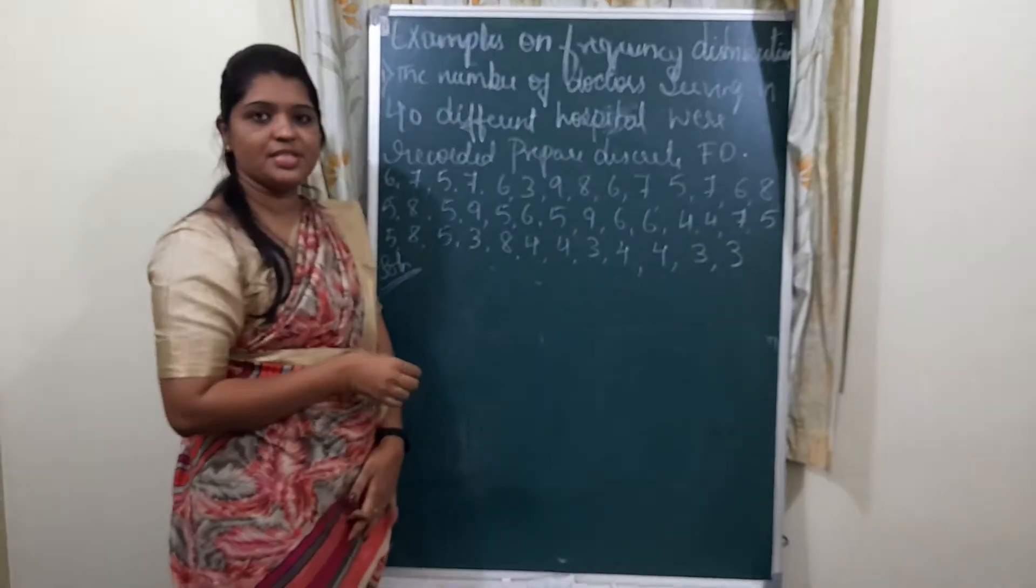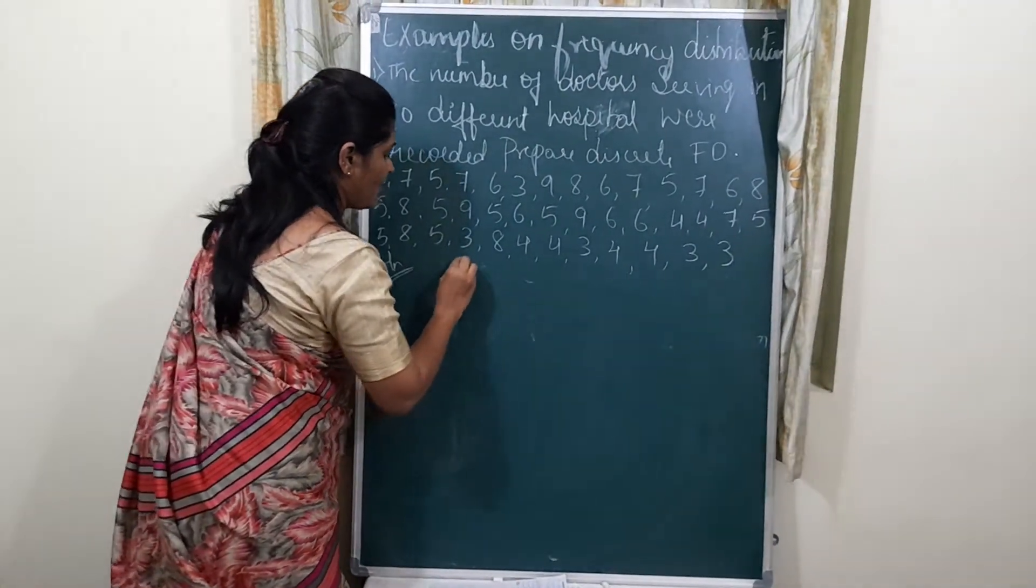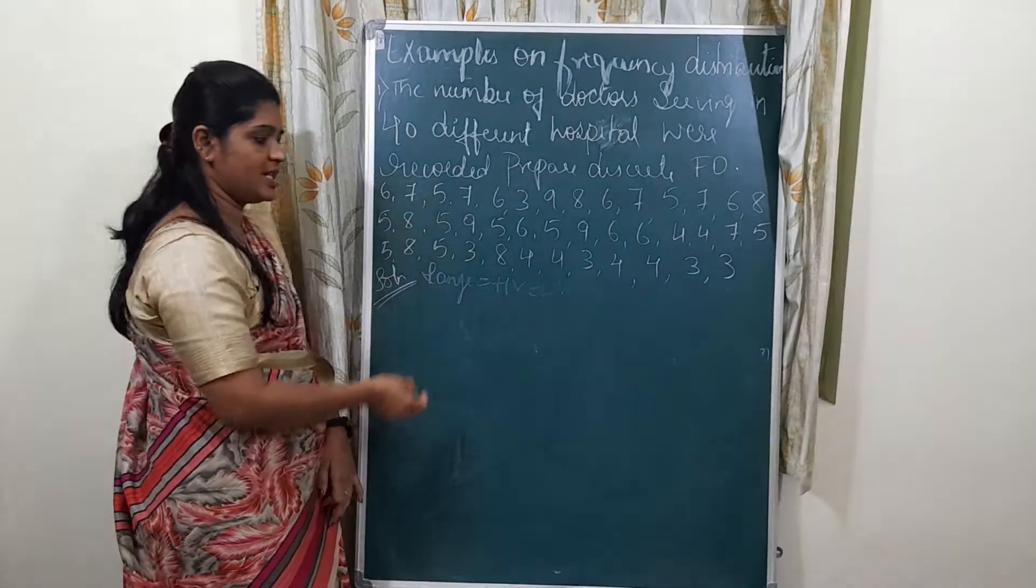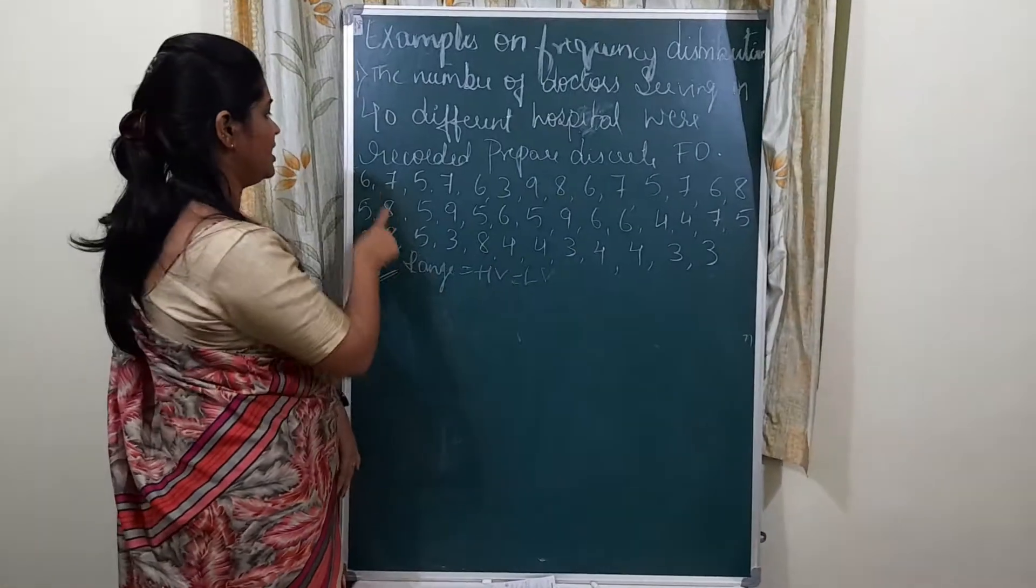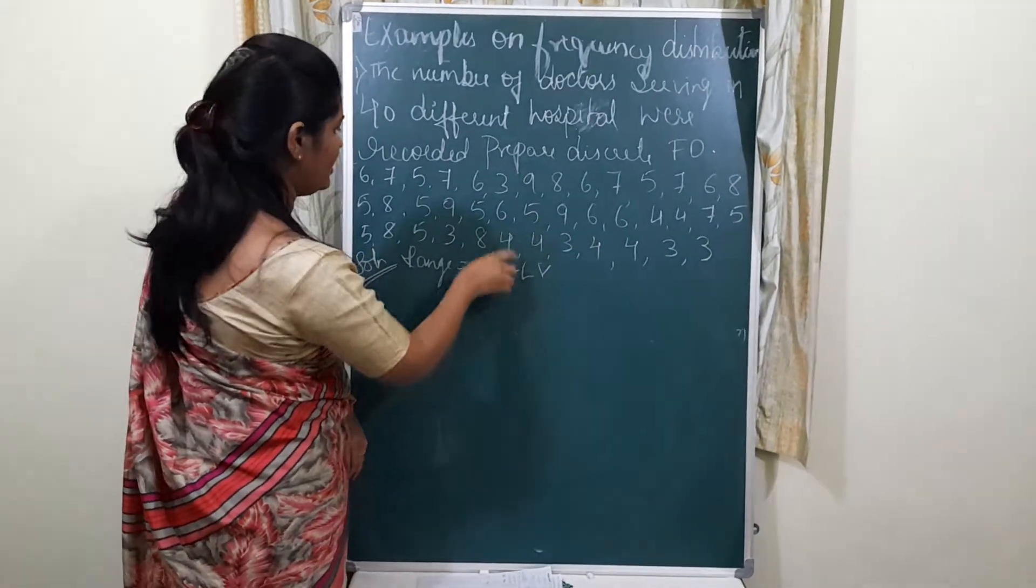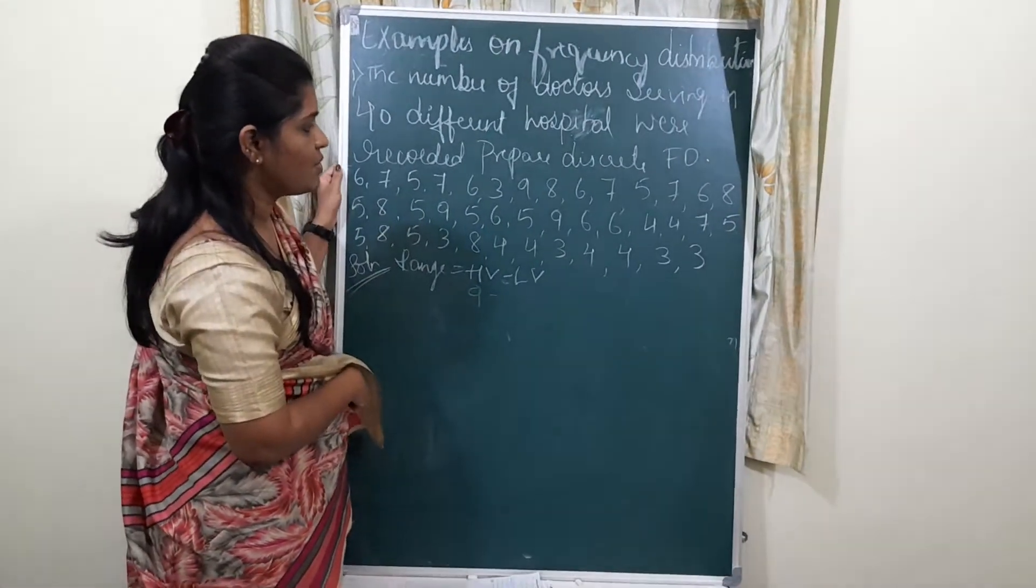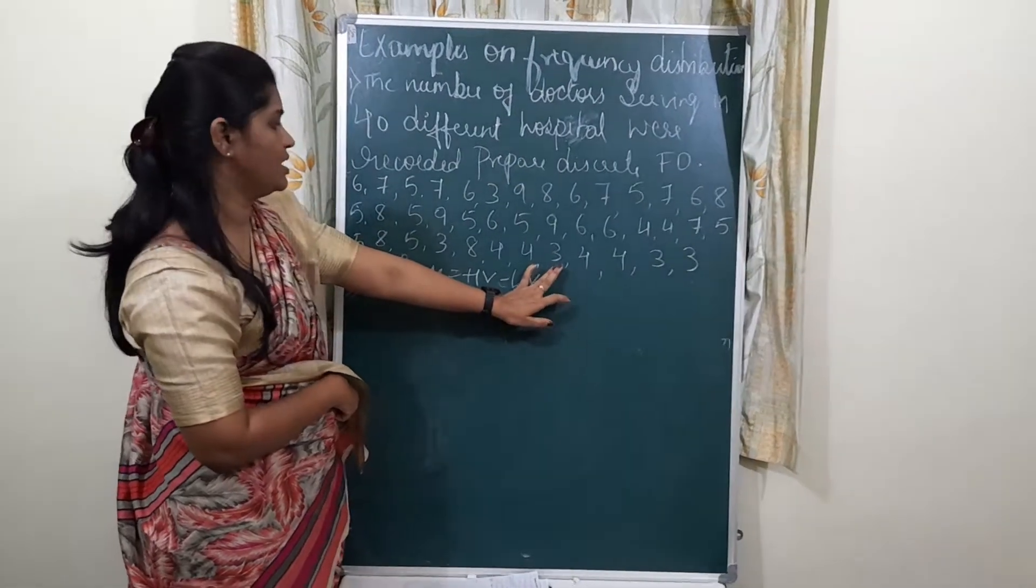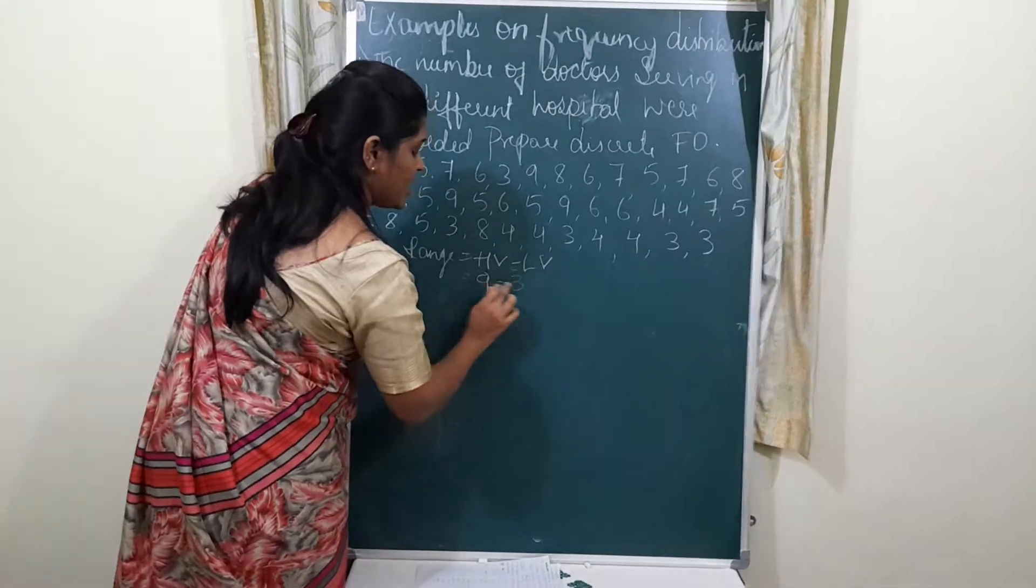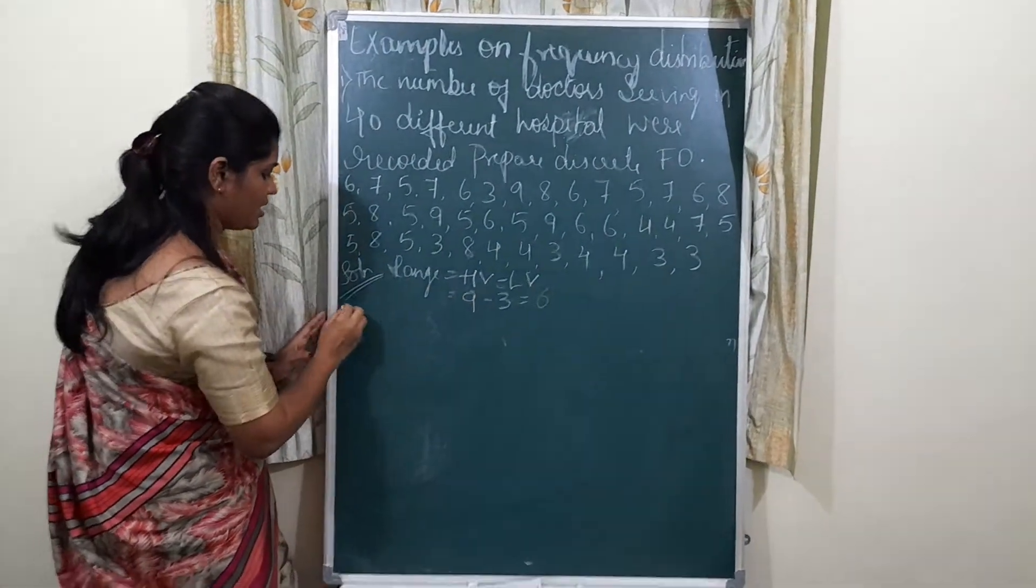Coming to yesterday, we have discussed about range. Range is equal to highest value minus lowest value. Actually we have discussed yesterday about range, right? Highest value is 9, lowest value is 3. So the range is 9 minus 3 is 6.